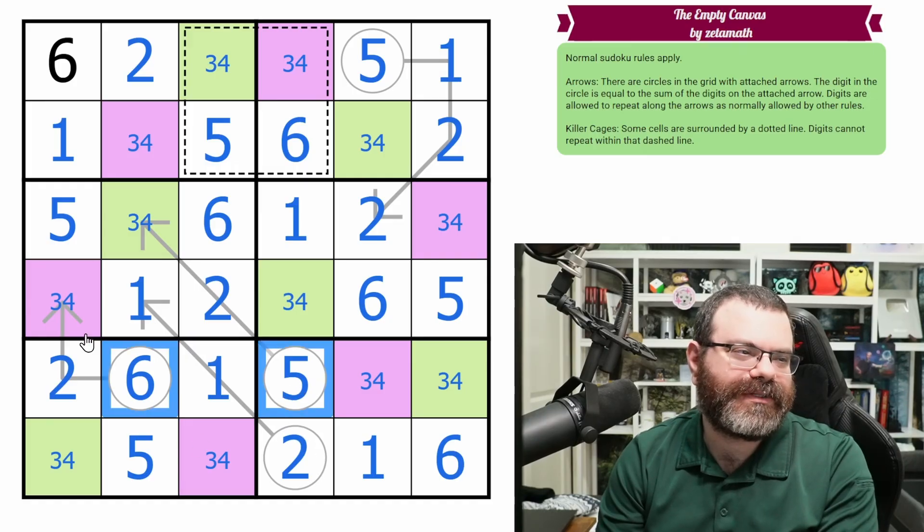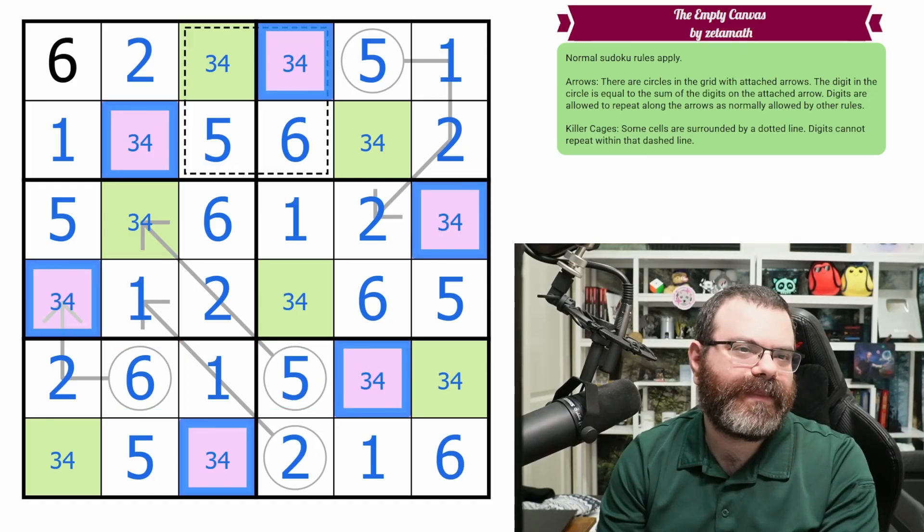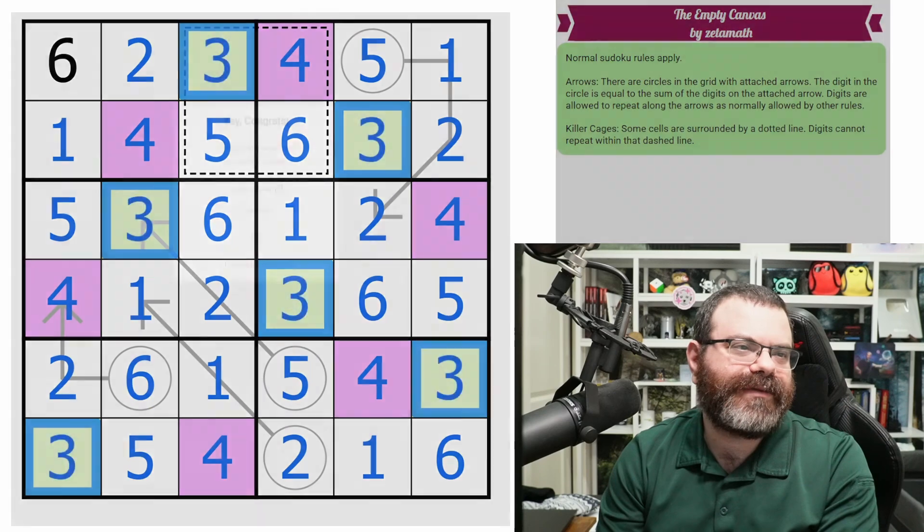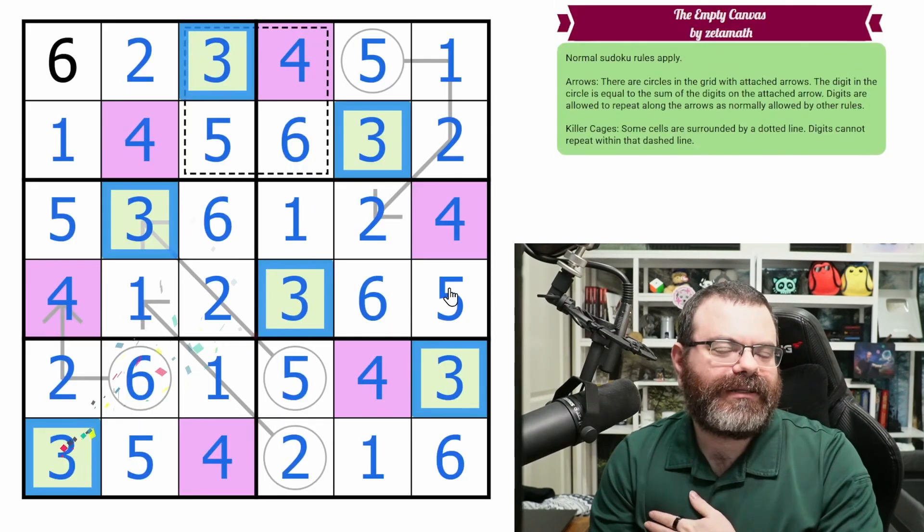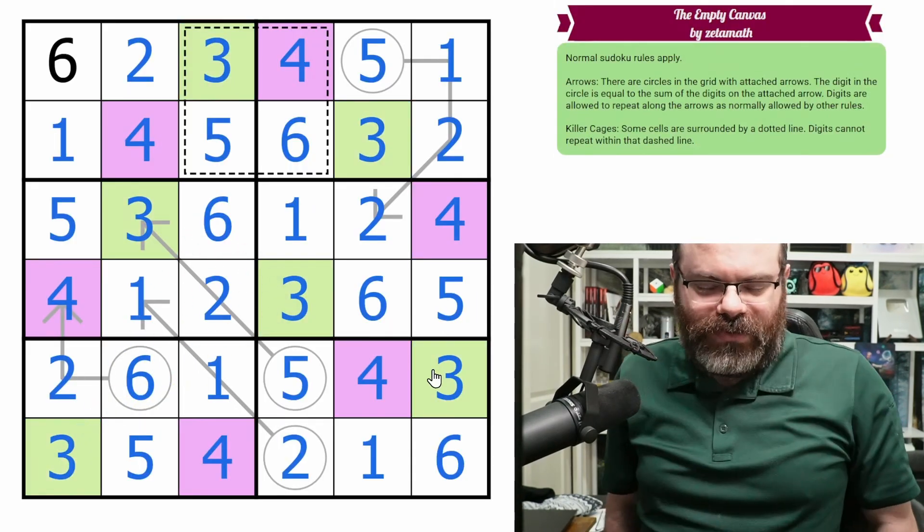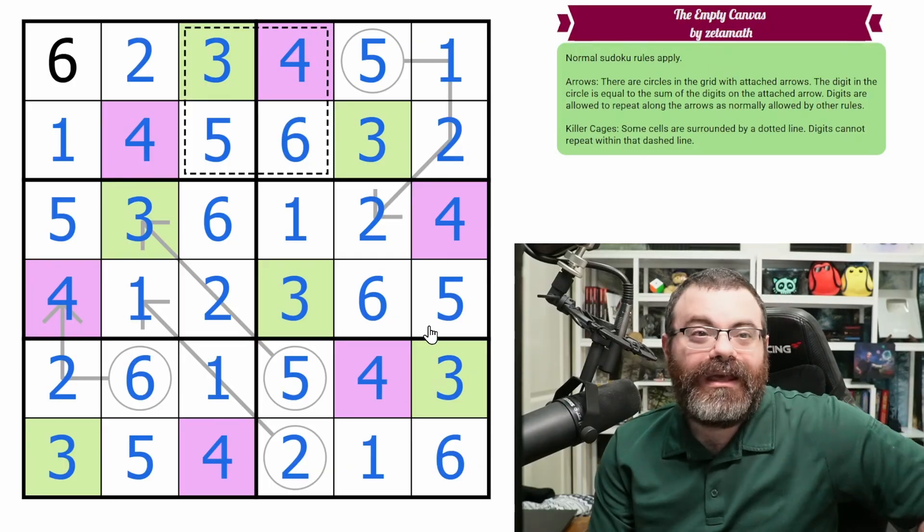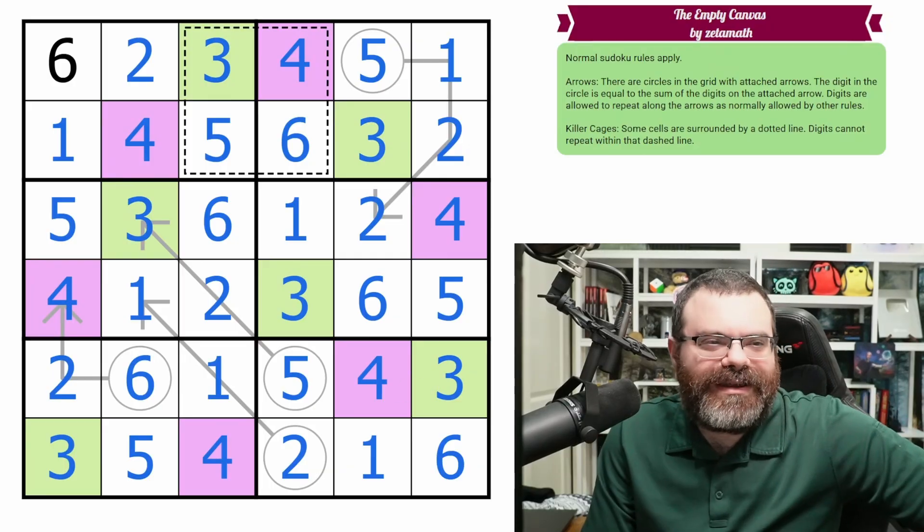Now we have to figure out whether green or purple is 3 or 4. Well, we can just use these arrows. So purple has to be 4. And then green has to be 3. And we're done. Nice. Got to color in a Zeta Math puzzle. And there's a 3 in the corner, shooting confetti. Cool. A very nice puzzle, Zeta Math. I enjoyed that.